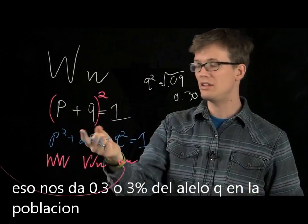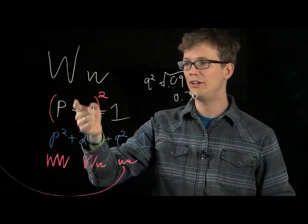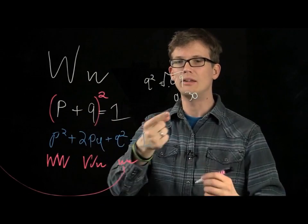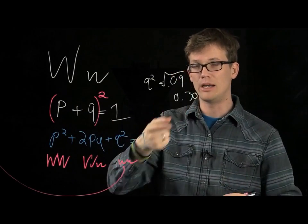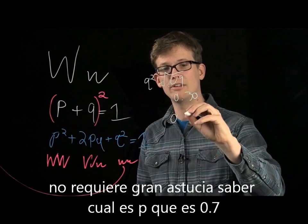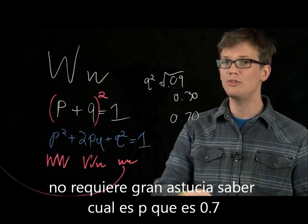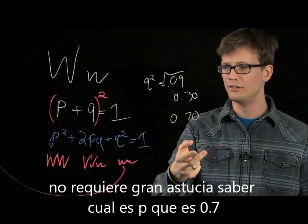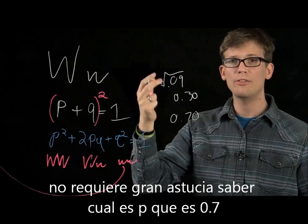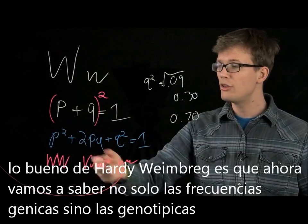And then we just use the simplest equation in the world to figure out what p is — just 1 minus q — and that's 0.70. Now, using our Hardy-Weinberg equation, we can go beyond the frequency of the alleles and actually talk about the frequency of the genotypes.